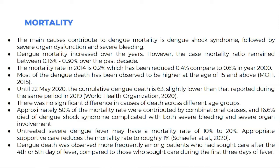Most dengue deaths have been observed to be higher at age 15 and above. Until 22 May 2020, the cumulative dengue death count is 63 cases, slightly lower than the same period in 2019. There was no significant difference in causes of death across different age groups. Approximately 50% of mortality was contributed by combined causes, and 16.6% died of dengue shock syndrome complicated with both severe bleeding and severe organ involvement. Untreated severe dengue fever may have a mortality rate of 10–20%, but appropriate supportive care reduces this to roughly 1%. Dengue death was observed more frequently among patients who sought medical care after the 4th or 5th day of fever.